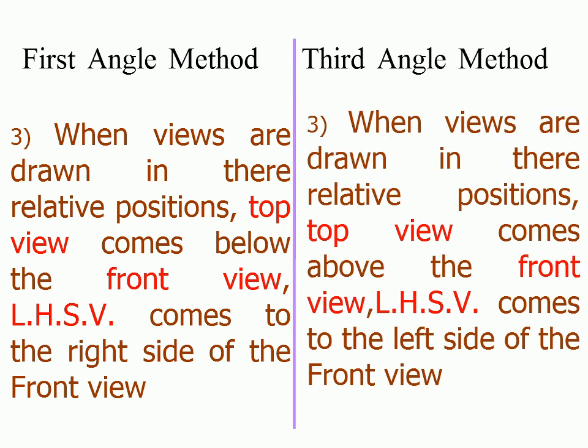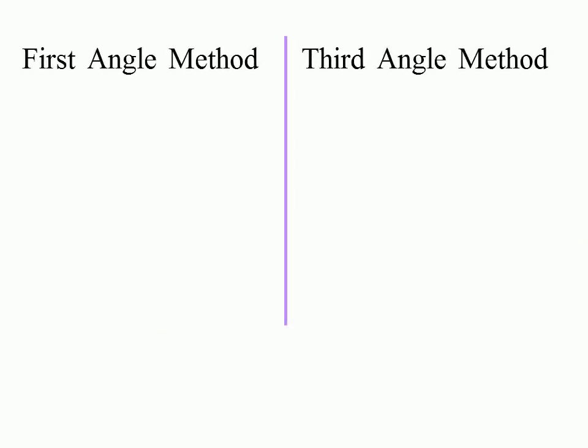When views are drawn in their relative positions in third angle method, top view comes above the front view, and left hand side view comes to the left side of the front view. To symbolize first angle and third angle method, symbols are used.